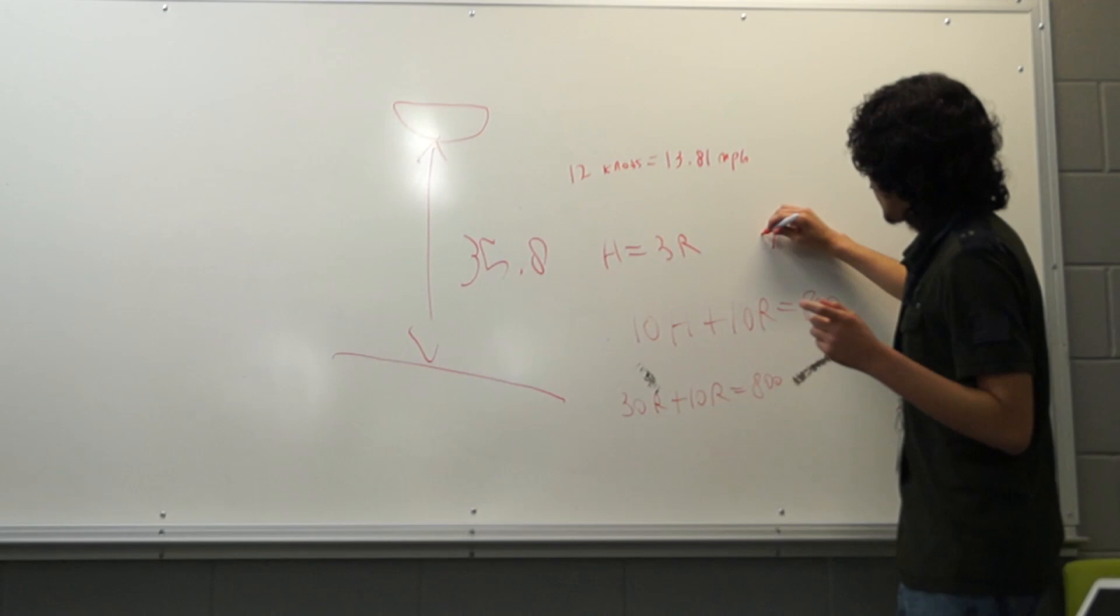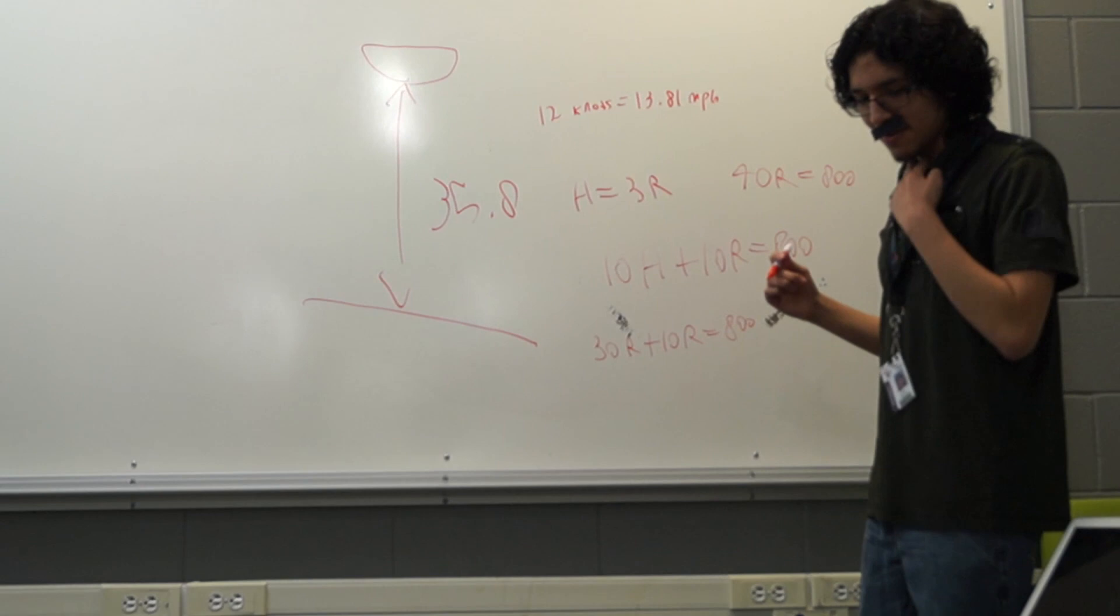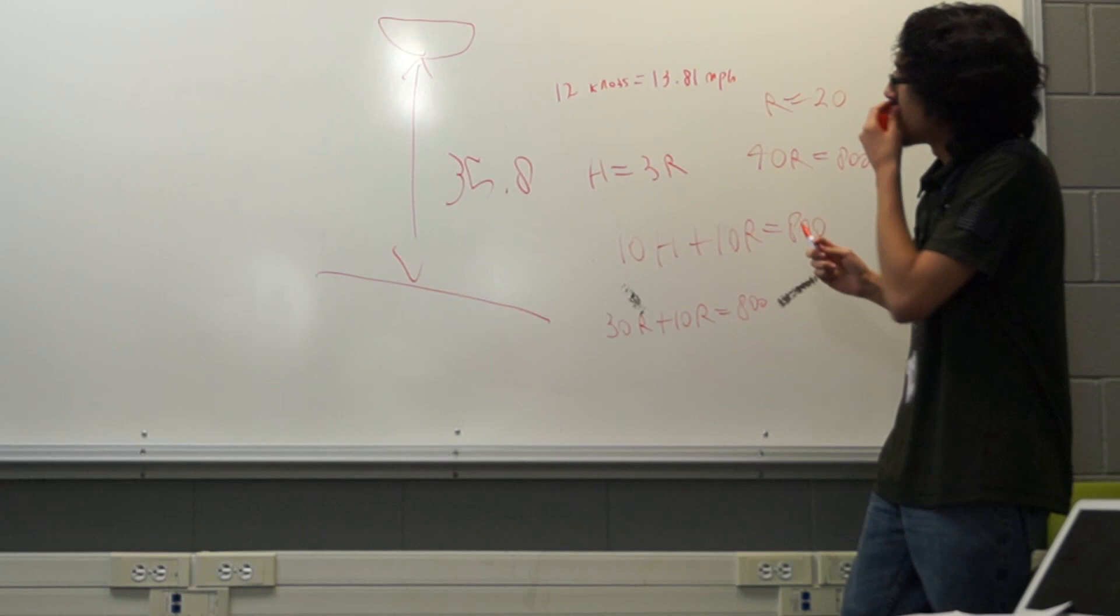And so, we can divide both sides by 40 to find that the rain fills 20 gallons each minute. By that, we can determine that the holes fill up 60 gallons per minute by multiplying R by 3.